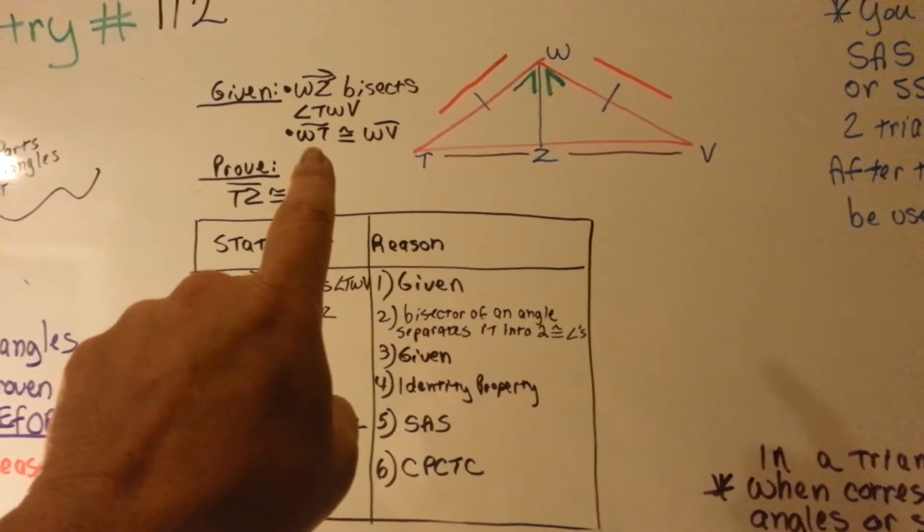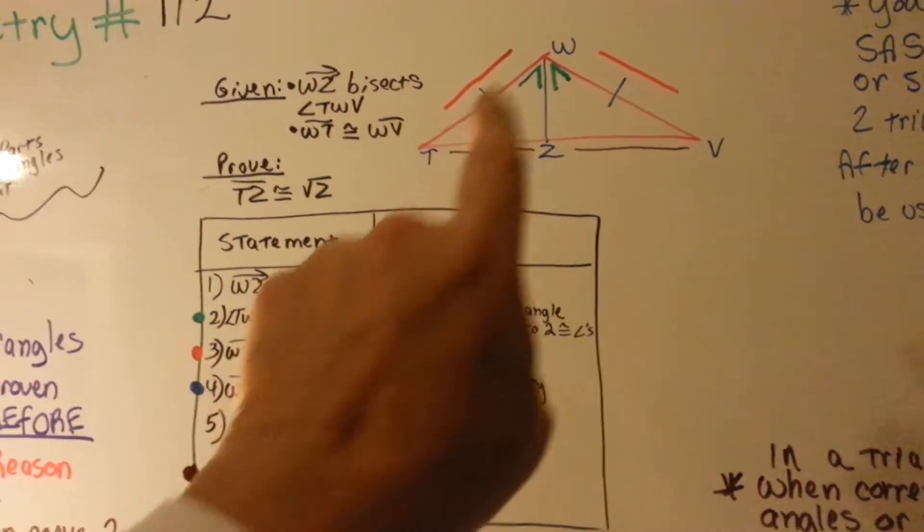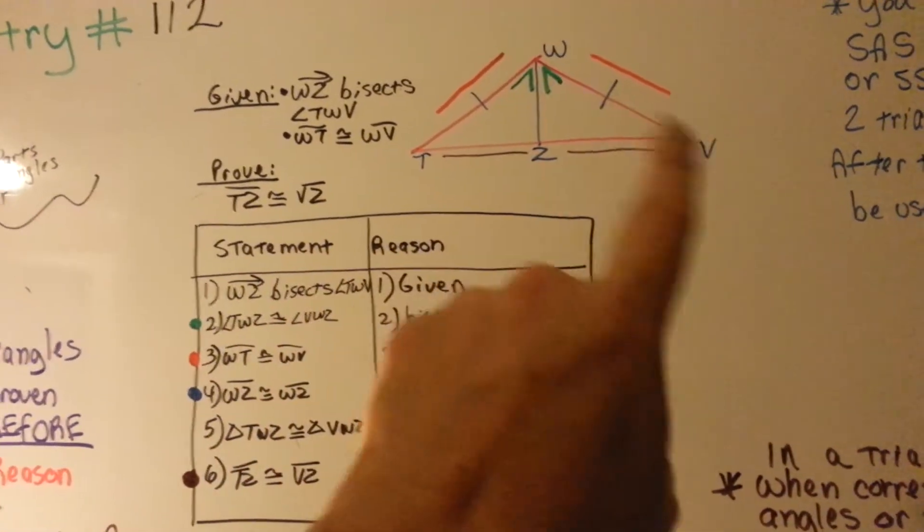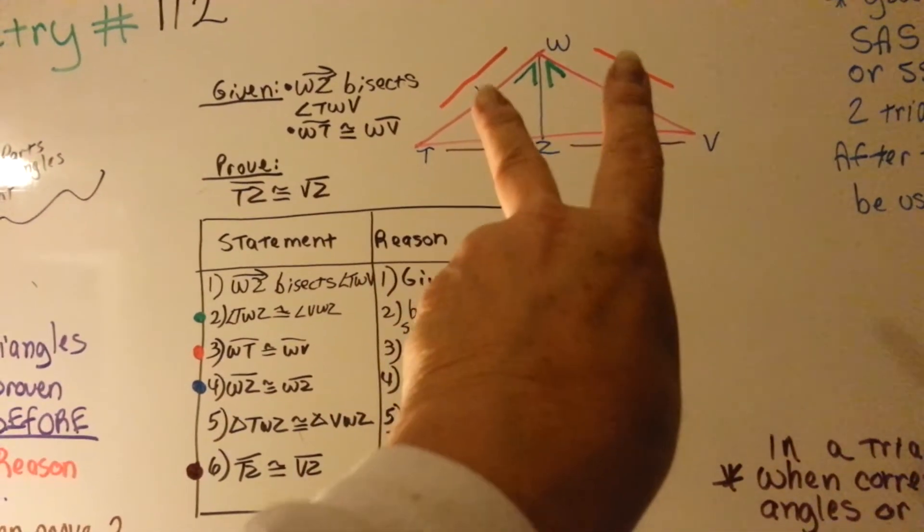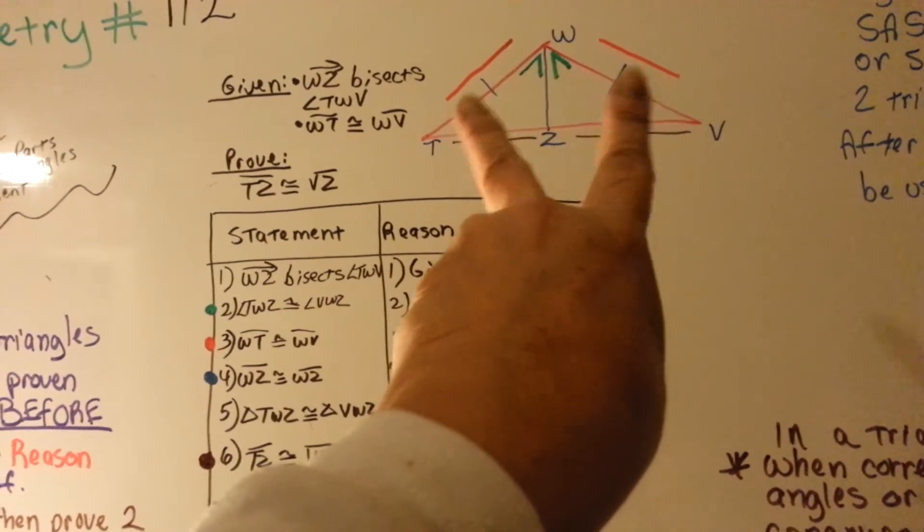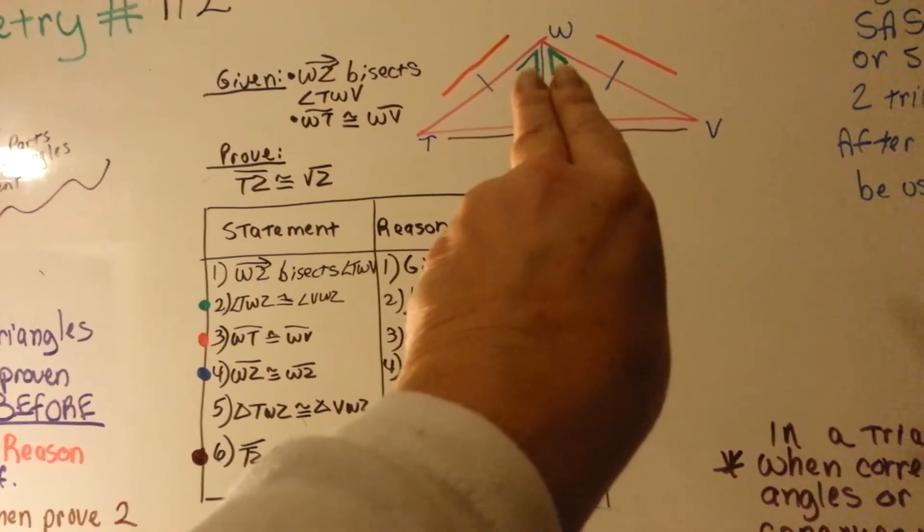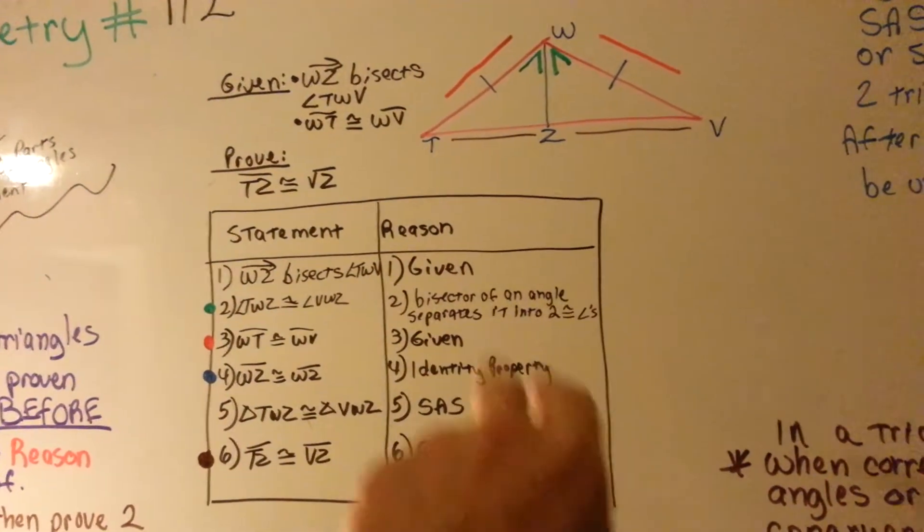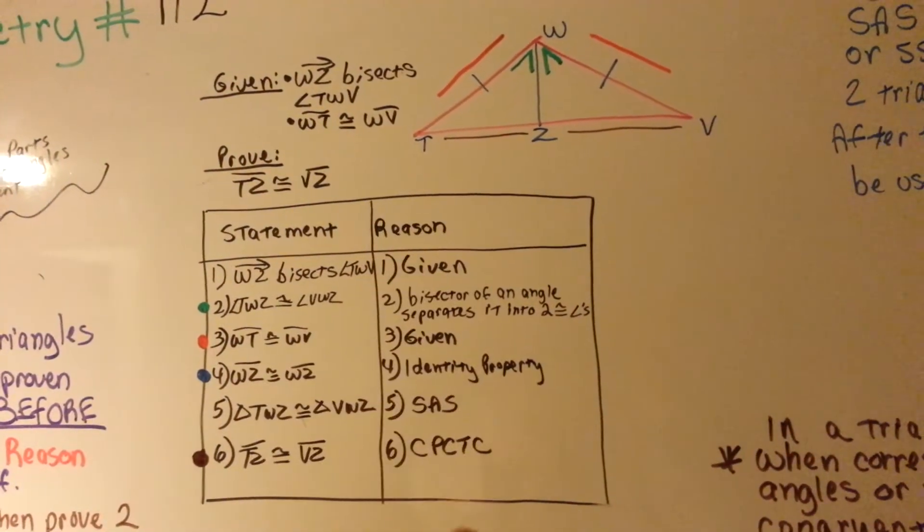Now, the other thing that's given is that WT, this guy with the red line above him, is congruent to WV with the red line above it. And I purposely put those two red lines so you could see that those two are congruent. And I put the two little green angle marks in those angles so that you could see that they are congruent.